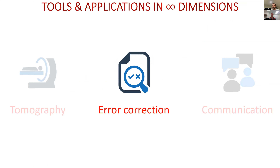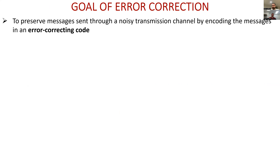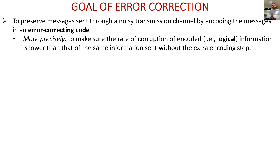Now I'll move on to error correction. The goal of error correction is to preserve messages sent through a noisy transmission channel by encoding the messages in an error correcting code. This is a very general framework started by Shannon over 70 years ago. It's beautiful in that it encompasses both classical and quantum transmission of information — the same framework started long ago is utilized for our quantum devices.